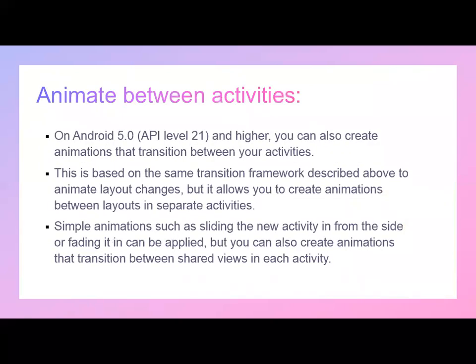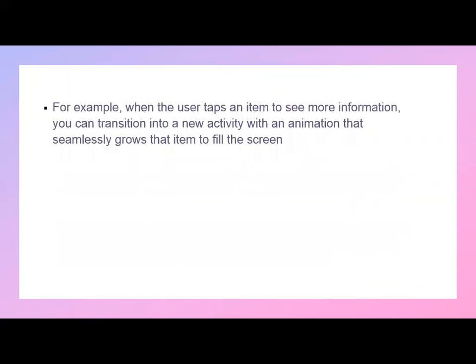Last is animation between activities. For Android 5.0 and API level 21 and higher, you can also create animations for transitions between activities. This is based on the same transition framework described for animating layout changes, but it allows you to create animations between layouts in separate activities. Simple animations such as sliding a new activity in from the side or fading it in can be applied. You can also create animations that transition between shared views in each activity. For example, when the user taps an item to see more information, you can transition into a new activity with an animation that seamlessly grows the item to fill the screen.